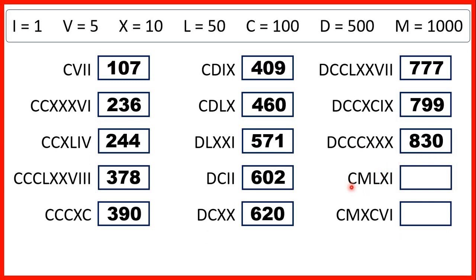Now we have C before M, so that's 100 before 1000, which is 900. We have L and then X, so that's 50 and then 10, which is 60. And we have I, which is 1, so that's 961.